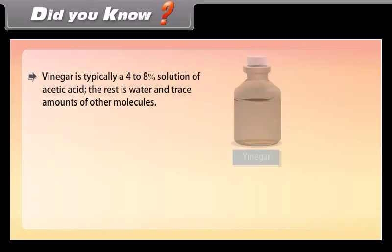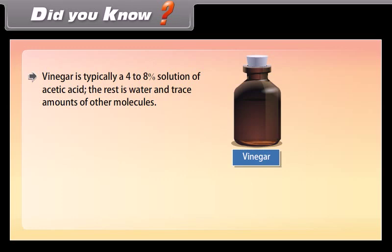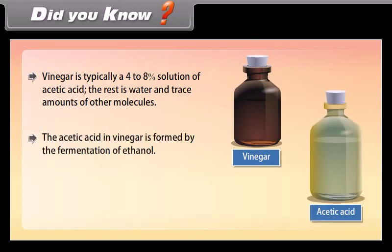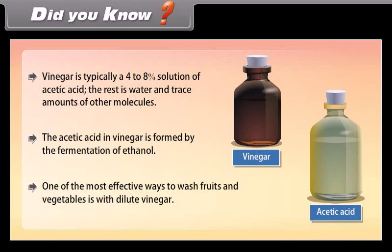Did you know? Vinegar is typically a 4-8% solution of acetic acid; the rest is water and trace amounts of other molecules. The acetic acid in vinegar is formed by the fermentation of ethanol. One of the most effective ways to wash fruits and vegetables is with dilute vinegar.